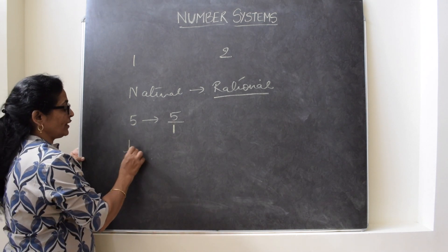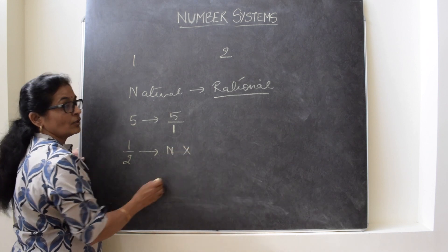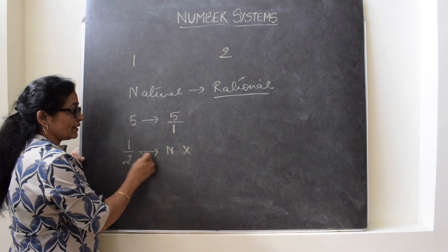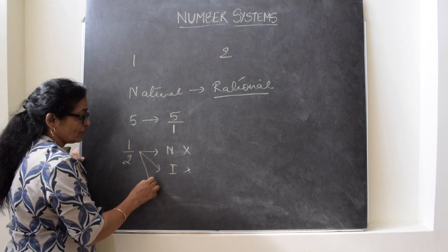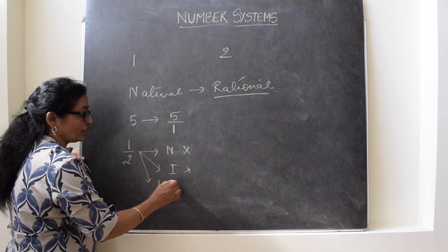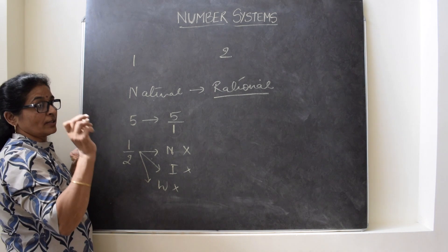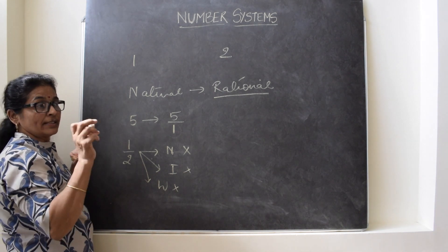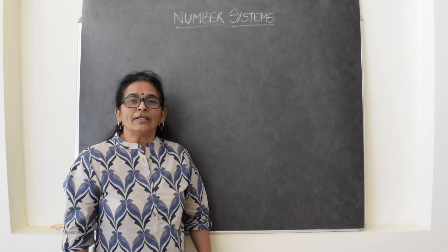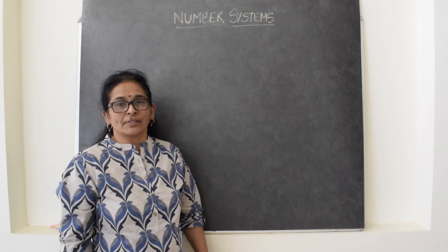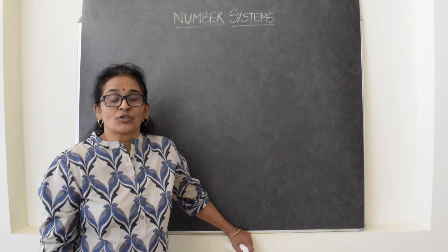Because every rational number — is it a natural number? No. Every rational number — is it an integer? No. Any rational number — is it a whole number? No. But if you check all the natural numbers, all the whole numbers, integers — they are rational numbers. Now we will discuss more about rational numbers. How to find the numbers between two given rational numbers?